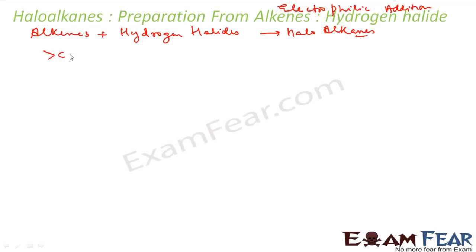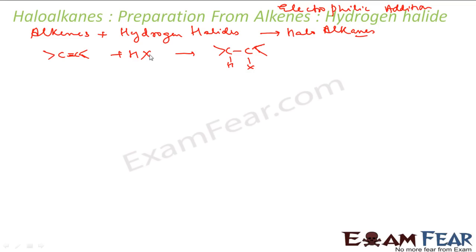Alkenes — if you see something like this with a double bond, you add a hydrogen halide. The double bond breaks and addition happens. So you get H and then X added. In this case, my H+ and X−, my electrophile is getting added. The first attack is by the electrophile — here it is H+ and X−, and this H+ is the one who attacks first.